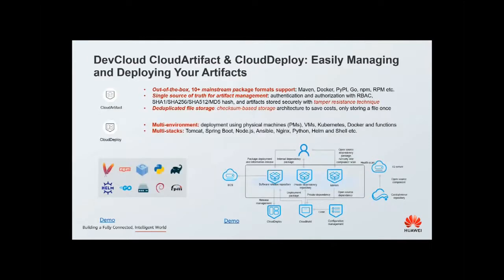Cloud Build can upload the software package to a release repository. Let's look at how Cloud Artifact manages build output artifacts. Cloud Artifact is a secure package management tool which supports 10+ mainstream package formats, including Maven, PyPI, Go, NPM, and more. You don't have to install and set up multiple repositories because Cloud Artifact can work as a single source for artifact management. Artifact security is a big concern — we provide RBAC authentication and authorization with multiple checksum types. The artifact will then be ready to be deployed.